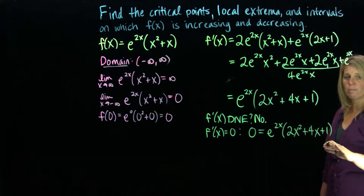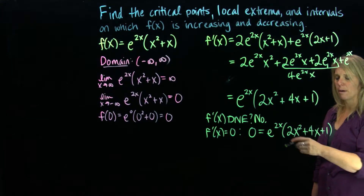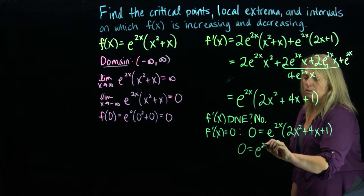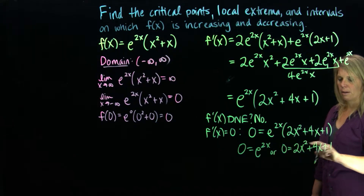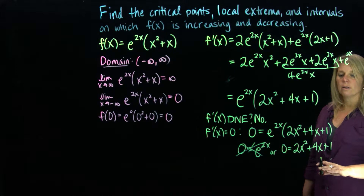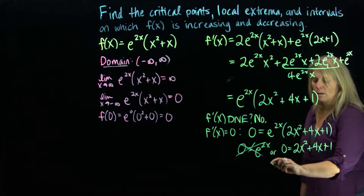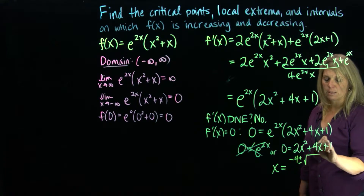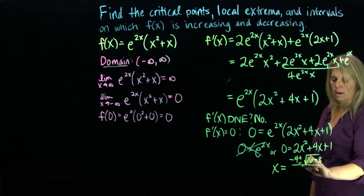The equation is already in factored form equal to zero. The only way we get zero when multiplying two things is if either factor equals zero. e to any power is never zero — it's always positive — so we get no x values from that factor. From the quadratic 2x² + 4x + 1, this doesn't factor, so we use the quadratic formula: x equals negative b plus or minus the square root of b² minus 4ac, all over 2a. That gives negative 4 plus or minus the square root of 16 minus 8, all over 4.